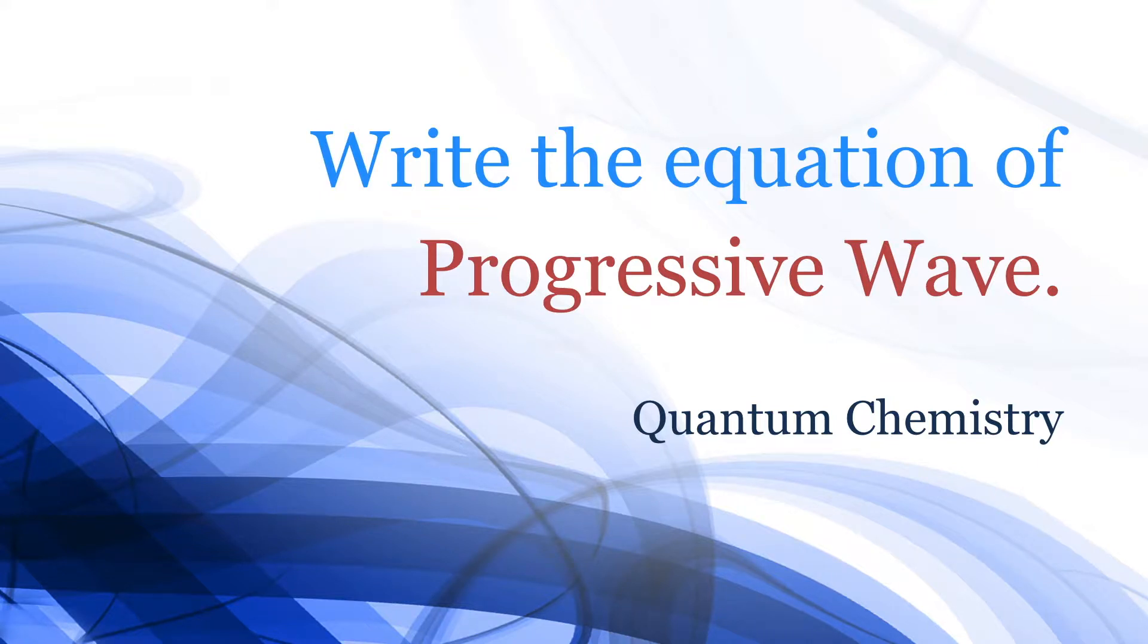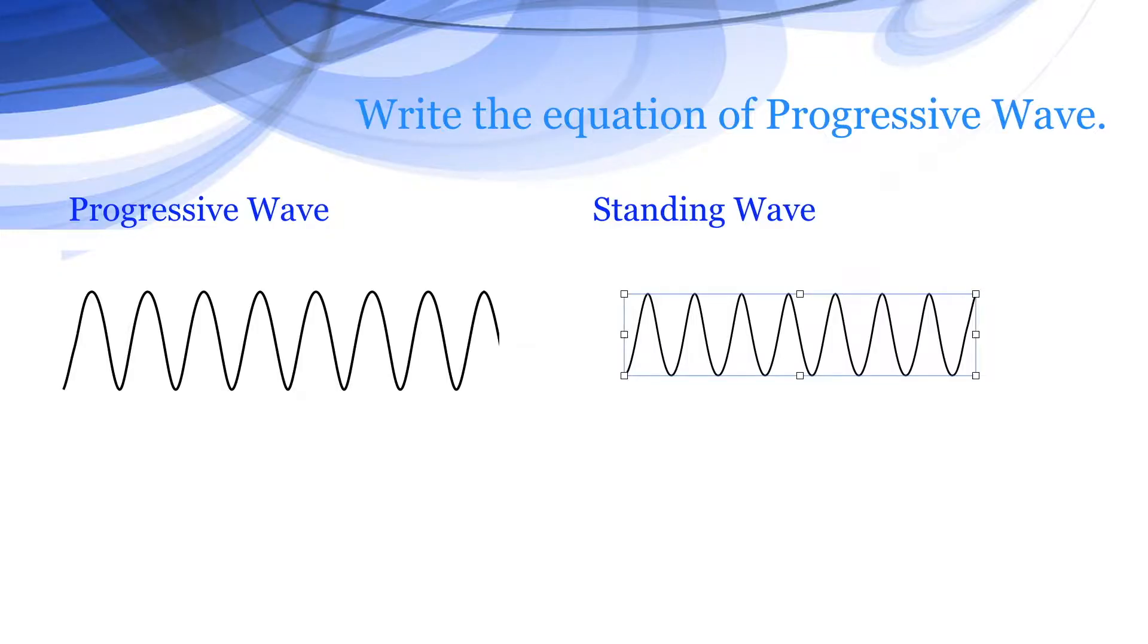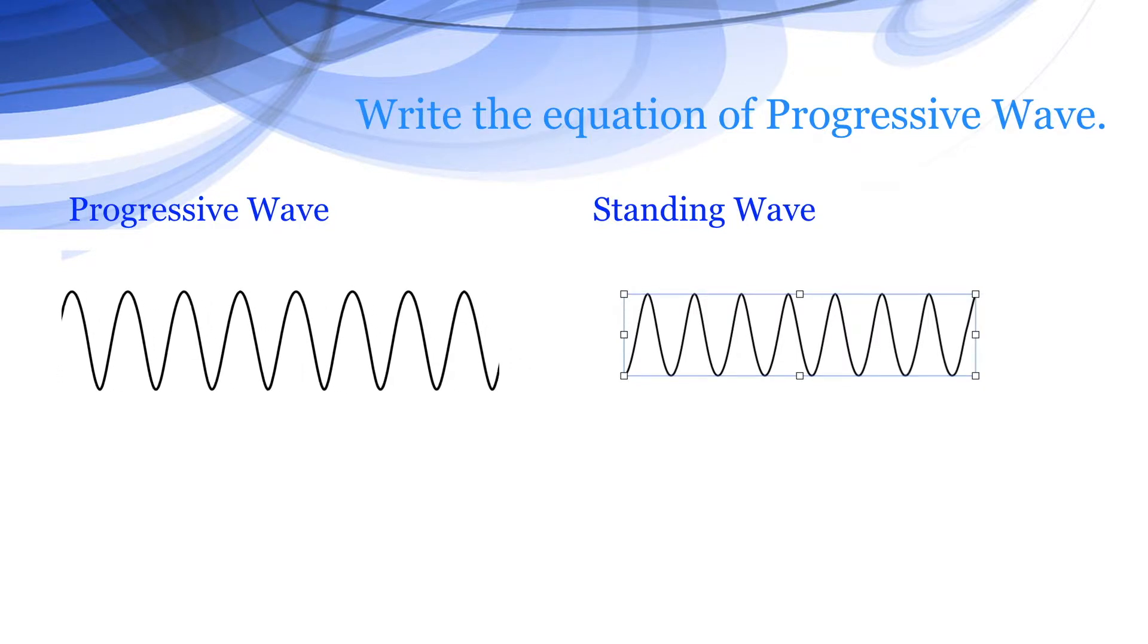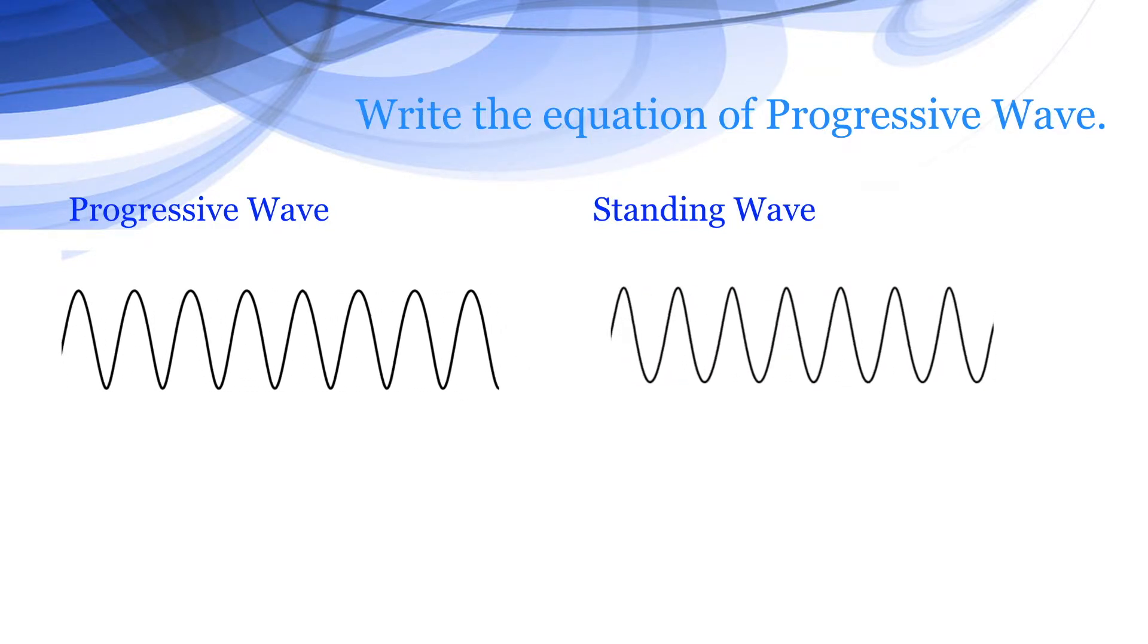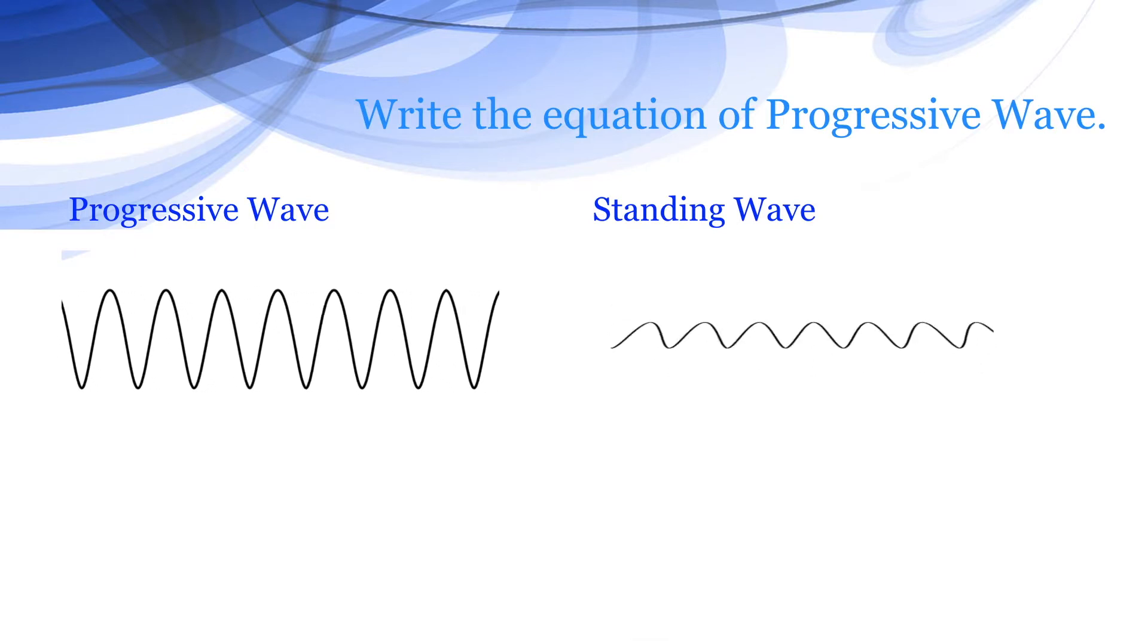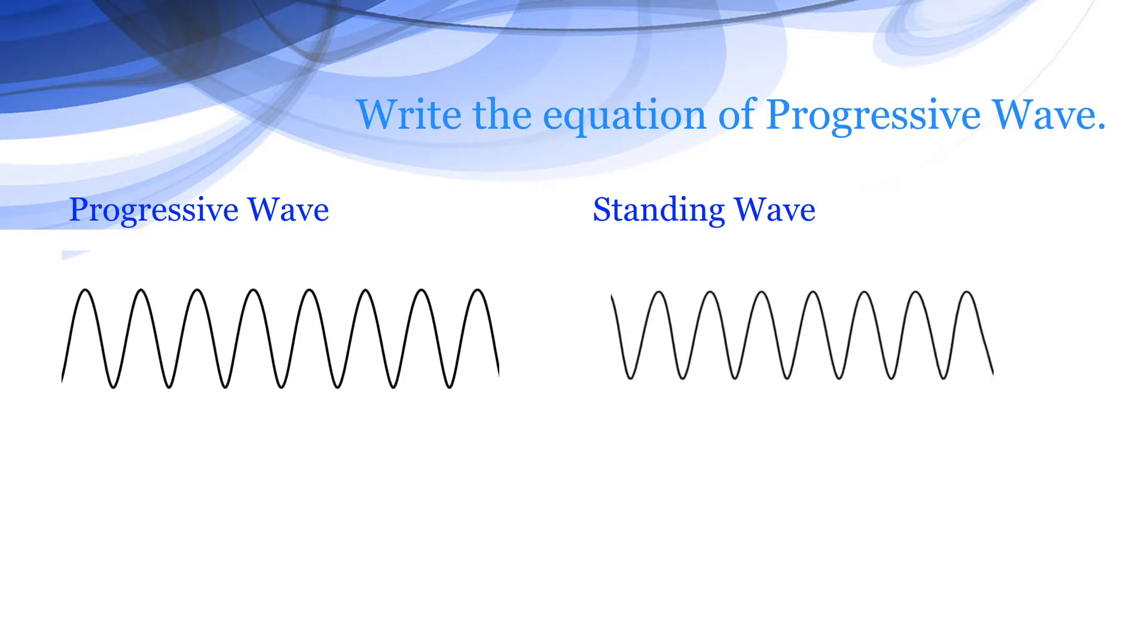Write the equation of progressive wave. There are two types of waves. One is progressive wave, that means which is moving in one direction. Second is standing wave, that is vibrating at the same position itself.